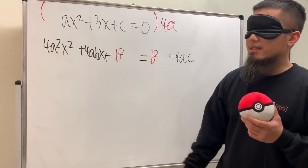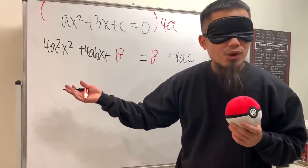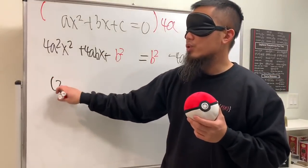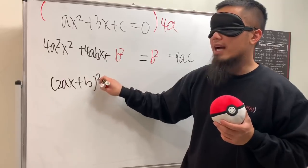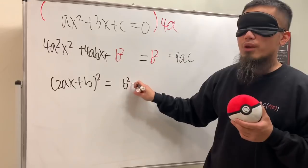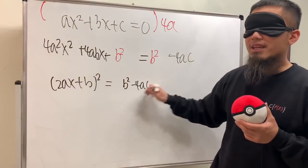Yeah, now the left hand side is what? Yes, it's a perfect square. Factor it, we get (2ax + b)², and that's going to be equal to the right hand side, b² - 4ac. And do you recognize this guy? You should.